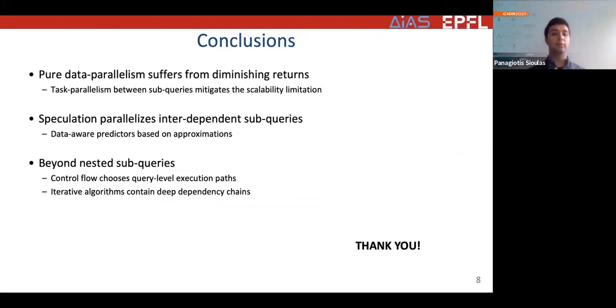Overall, we saw that pure data parallelism suffers from diminishing returns. And while task parallelism can mitigate this effect, it's not always an option. In this work, we saw that speculative execution allows us to exploit task parallelism in workloads where it was not possible for inter-dependent queries. To do that, we use approximations as data-aware predictors, which to our knowledge is a novel application for approximate query processing. In this work, we have focused on nested subqueries, but we plan to extend the scope of the work beyond this workload. Two workloads that we have already identified is control flow patterns, which use the result of a query to decide which query to execute next, and iterative algorithms, which have deep dependency chains. We look forward to having more results to share in this direction. Thank you very much for your attention.